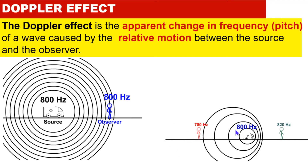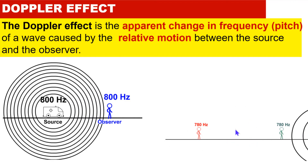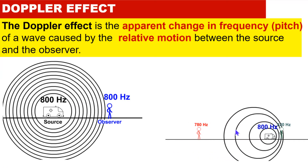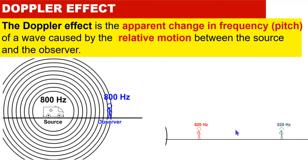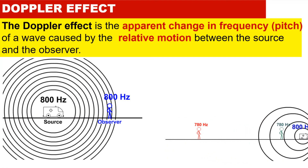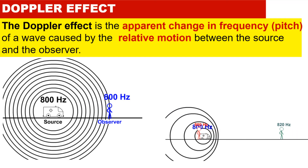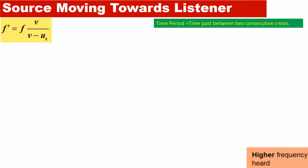So in the second animation, the observed frequency and the frequency produced by the source are not the same. This is all about the Doppler effect. First of all, let's try to understand what exactly time period is.